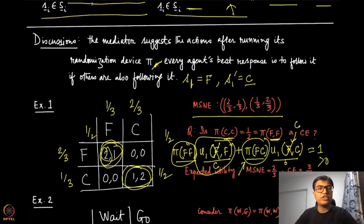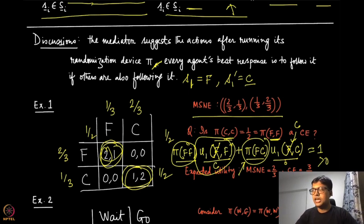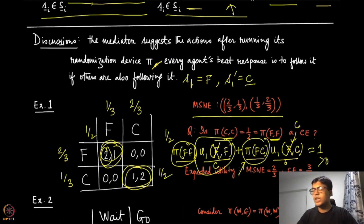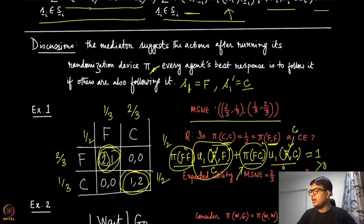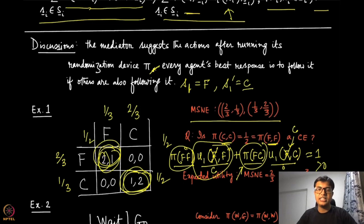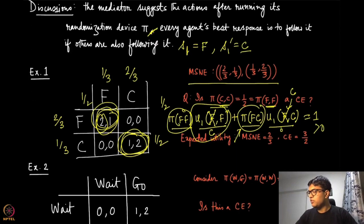Similarly, you can check when the suggestion to player one is C, and also perform the full verification for player two. In all cases the inequality is satisfied, confirming that putting probability 1/2 on (F,F) and 1/2 on (C,C) is indeed a correlated equilibrium.